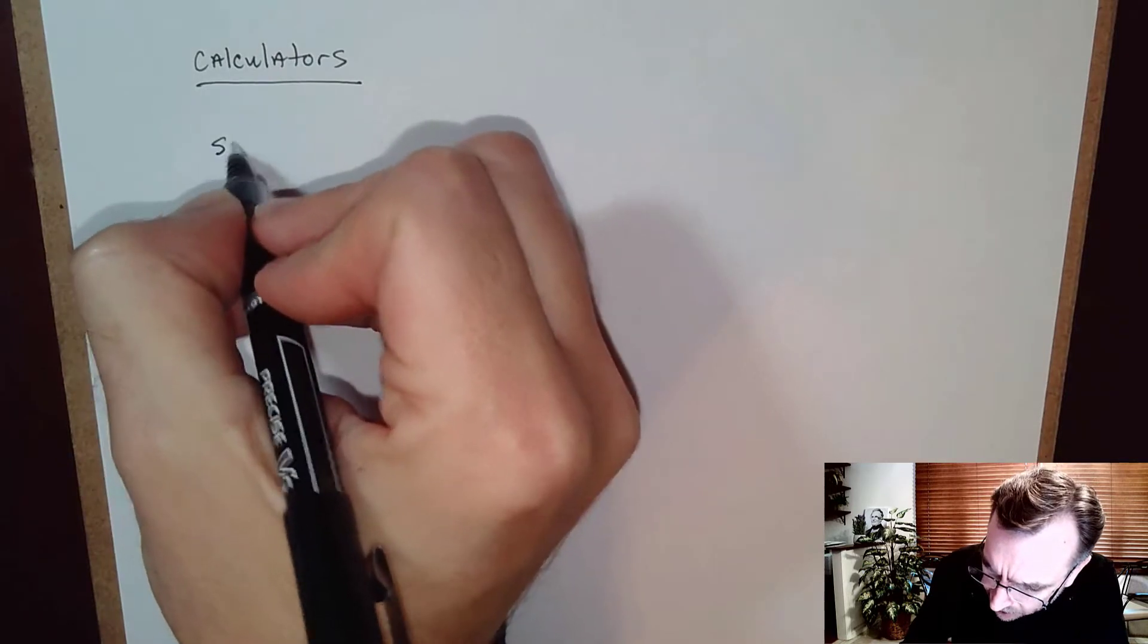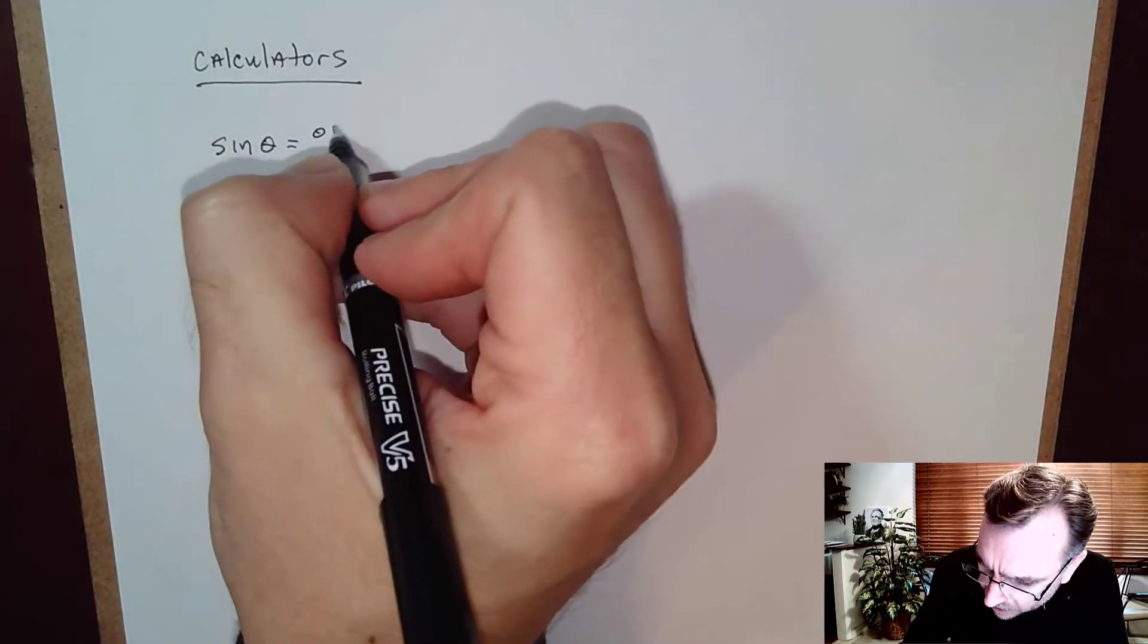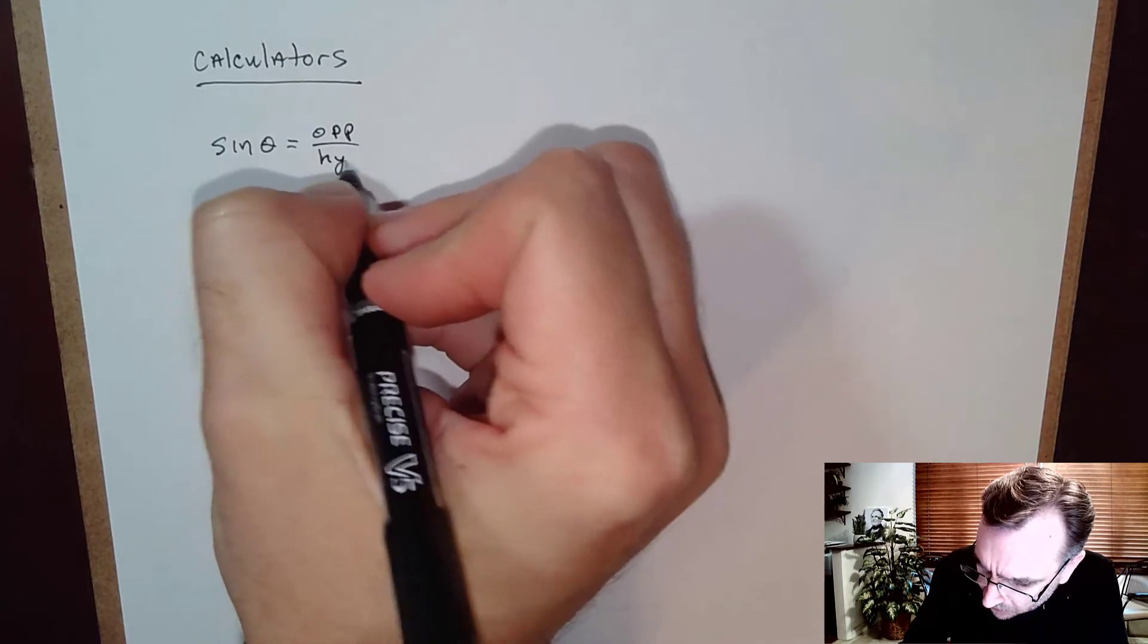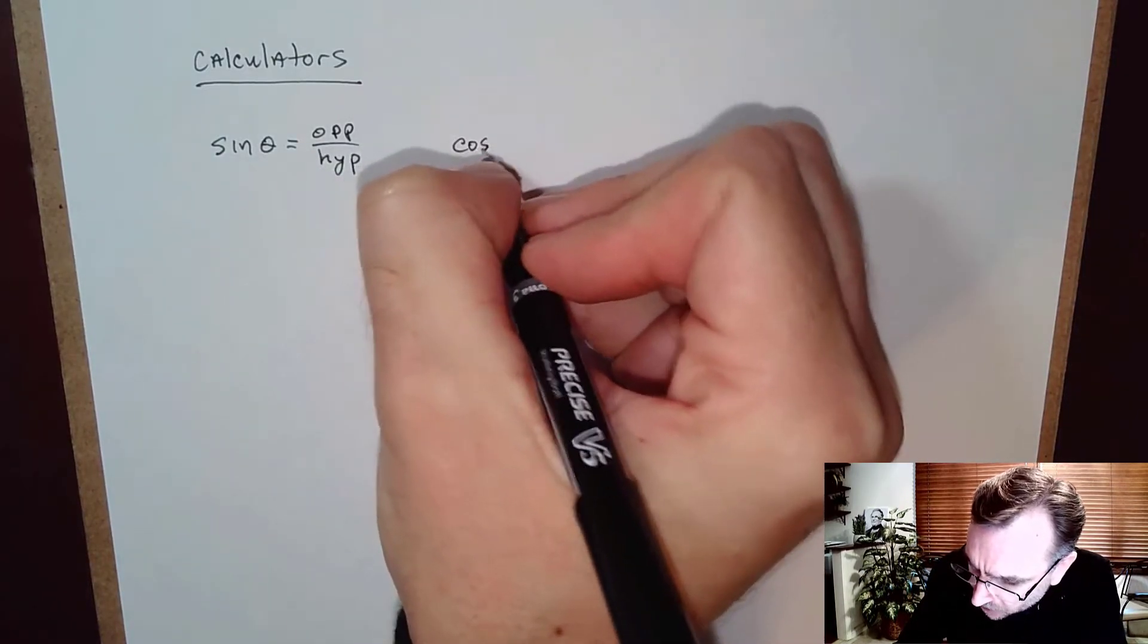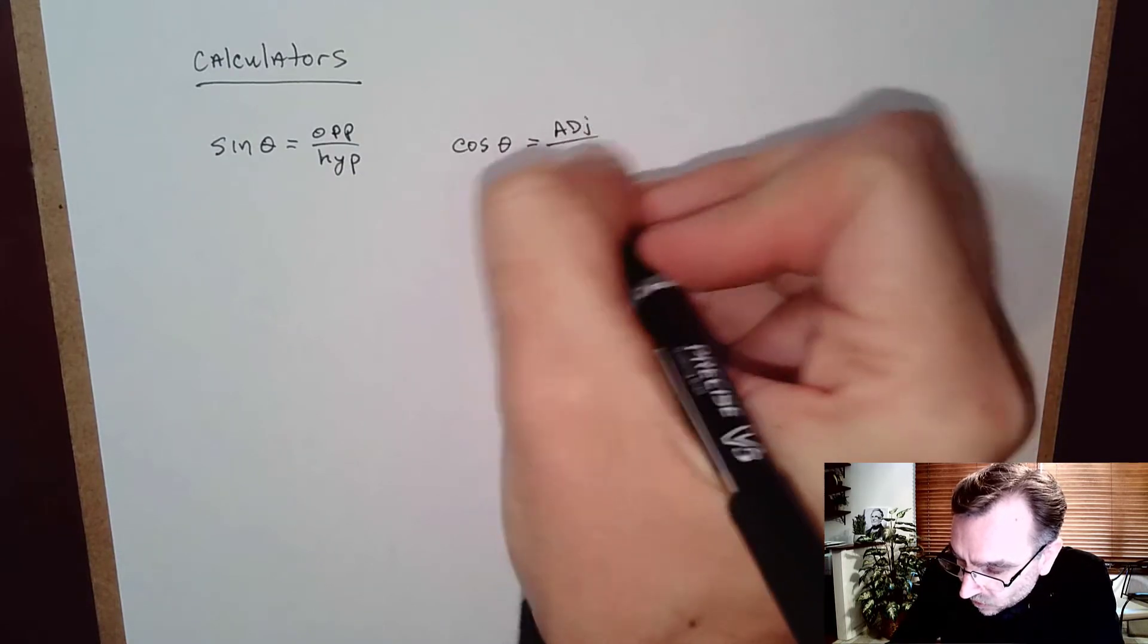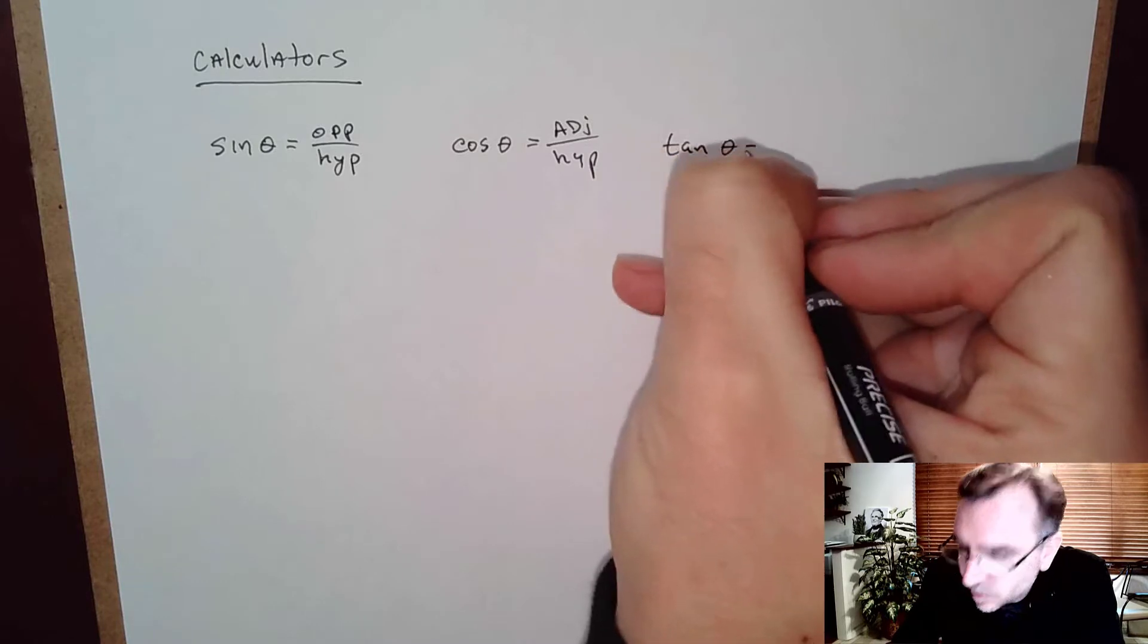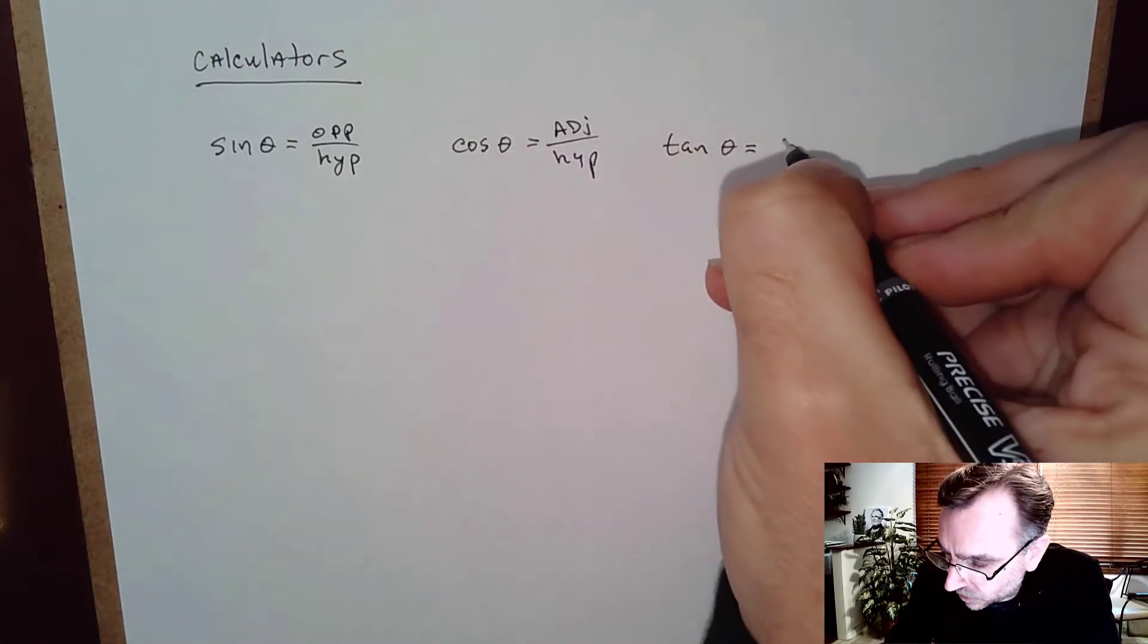Okay, in this video I want to talk a little bit about calculator work, and before we do that let's do a quick recap. We defined sine of an angle to be the side opposite over the hypotenuse, cosine of an angle to be the side adjacent over the hypotenuse, and tangent of theta to be the side opposite over adjacent.